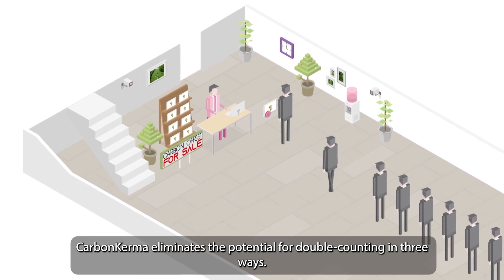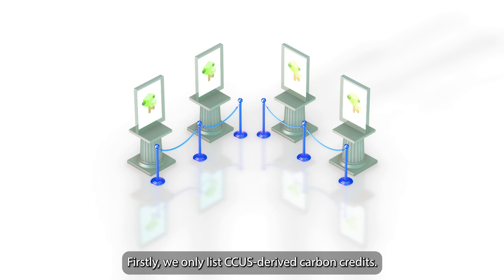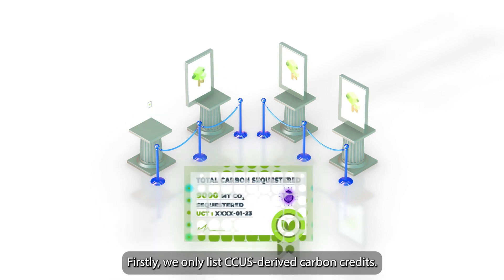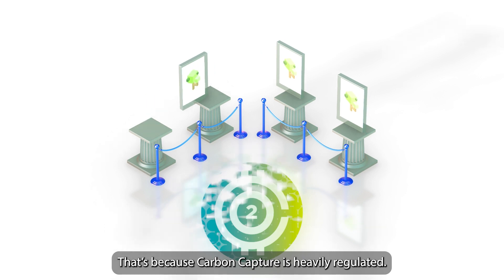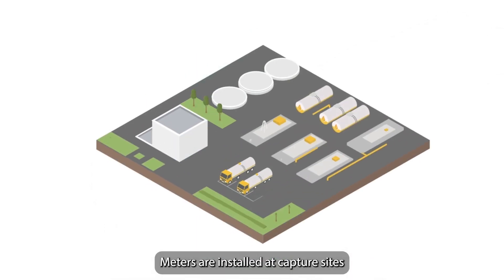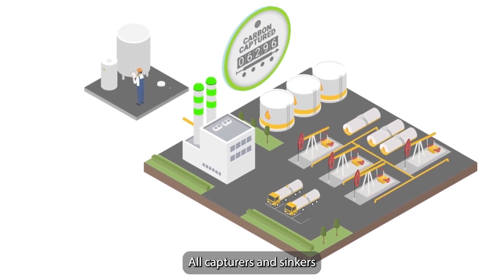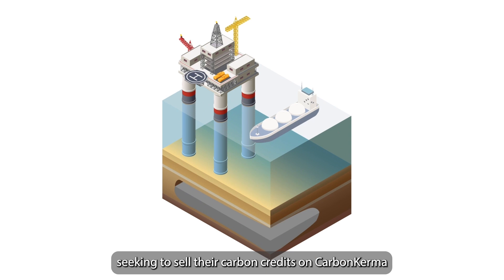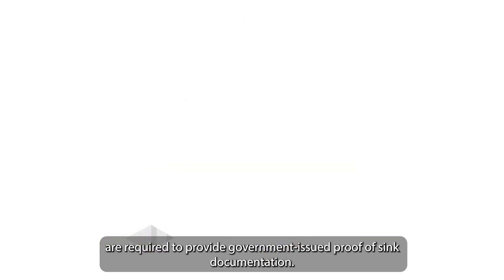Carbon Kerma eliminates the potential for double counting in three ways. Firstly, we only list CCUS-derived carbon credits. That's because carbon capture is heavily regulated. Meters are installed at capture sites to actually measure the CO2 being captured. All capturers and sinkers seeking to sell their carbon credits on Carbon Kerma are required to provide government-issued proof of sink documentation.